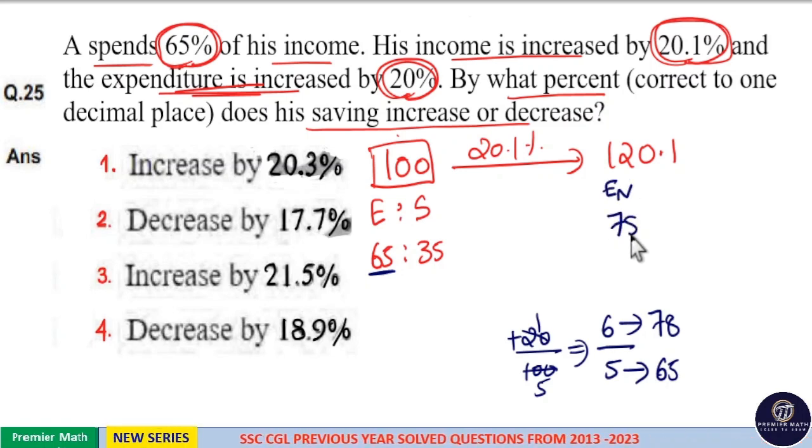Which means new savings is equal to 120.1 minus 78, which is equal to 42.1 rupees.